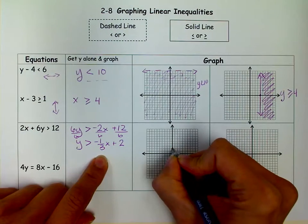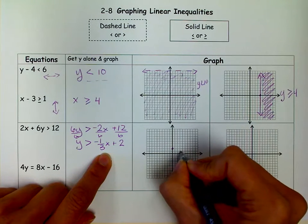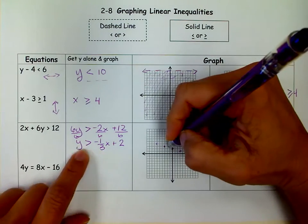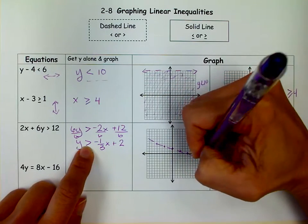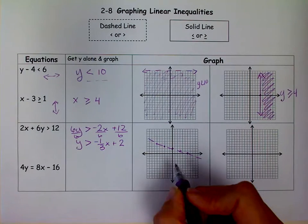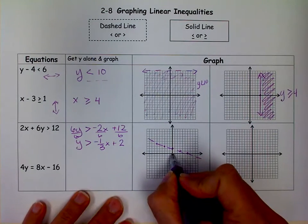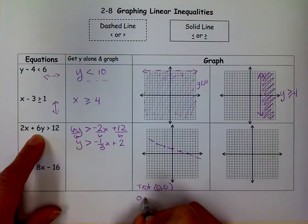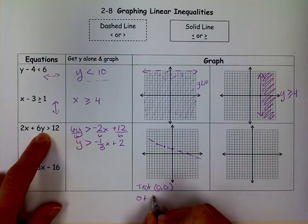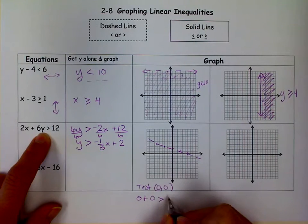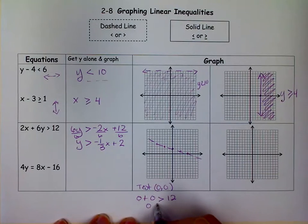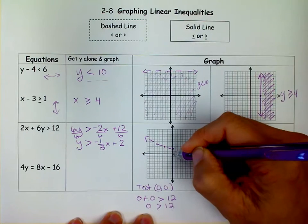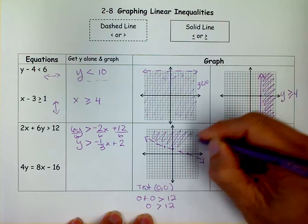I get Y is greater than negative one-third X plus 2. On my graph, I'm going to go up 2, then use my slope of negative one-third. That means I go down 1 over 3. Or I can go up 1, left 3. It's dashed. To decide which way to shade, I always like to pick a point, and I always pick 0,0 if it's available. I'm going to put a 0 in for X and 0 in for Y. Does 0 plus 0 equal 0? Is that greater than 12? No, it's not. So I don't shade that way because this would make it false. I want it to be true, so I shade this way.